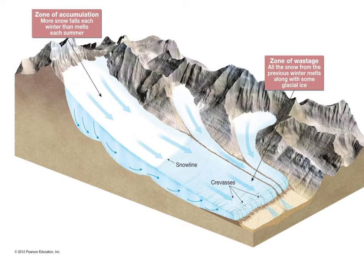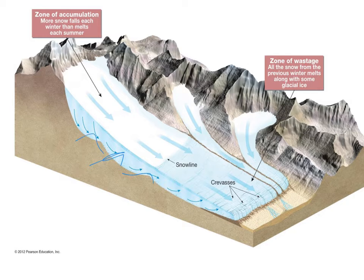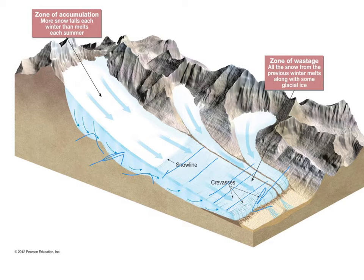You have the zone of accumulation and the zone of wastage — sometimes a picture is worth a thousand words. Other things we're seeing are crevasses. A crevasse forms in the top 50 meters of glacial ice because that's the brittle zone. Underneath there is the plastic flow, and that's why when you look down, you can see the glacier bends and changes to the terrain. But when it tries to do that, the top portion gets these cracks. Down here in your vocab term, we have the ice front or the terminus.